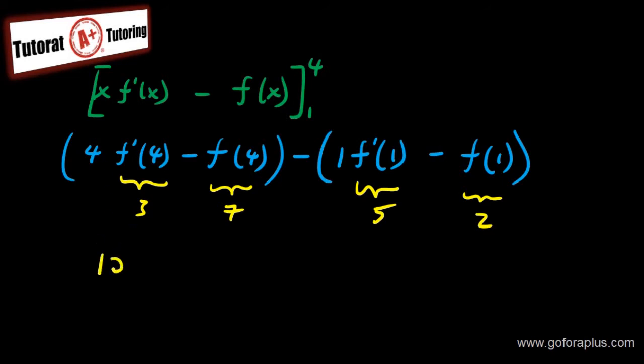So I have 12 minus 7 minus 5 plus 2. Okay, so this is going to be 2.